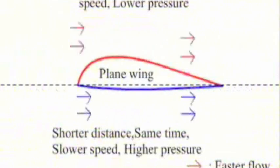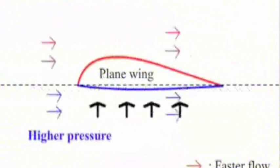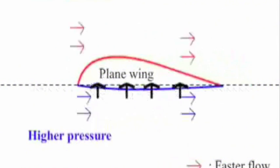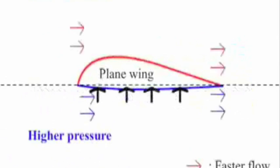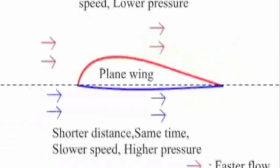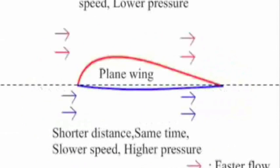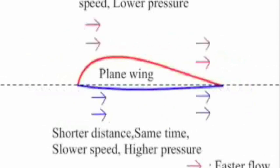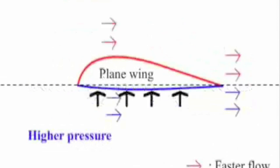Bernoulli's principle helps explain why an aircraft can achieve lift because of the shape of its wings. They are shaped so that air flows faster over the top of the wing and slower underneath. The high air pressure underneath the wings will push the aircraft up into the lower air pressure zone above the wings.